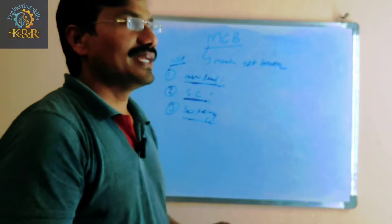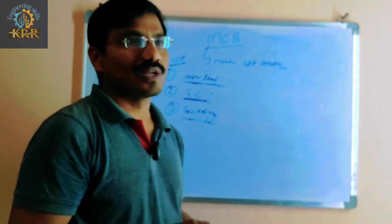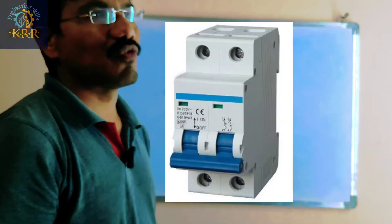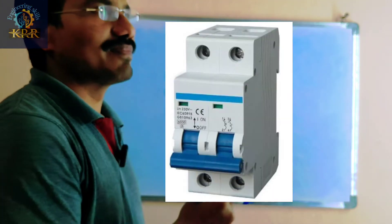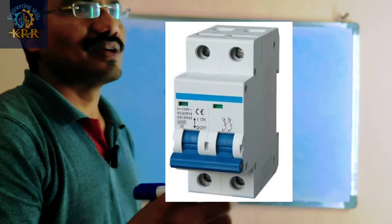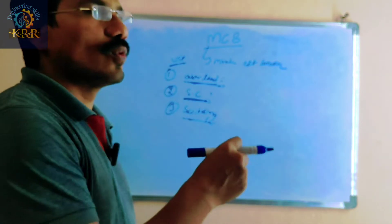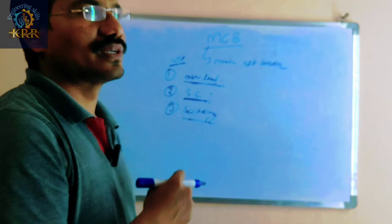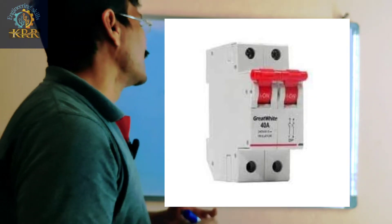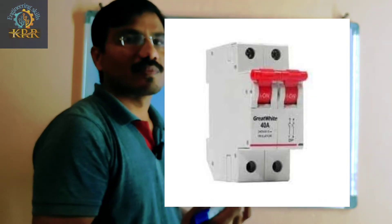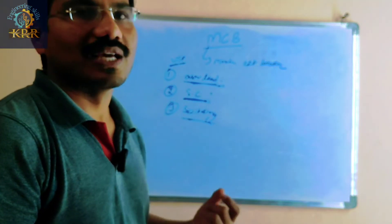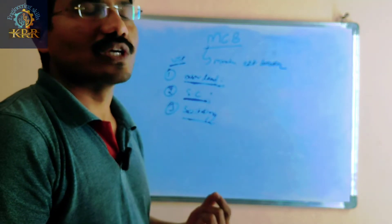For switching operations, when any maintenance work is going on, the MCB is switched off to isolate the load. After completion of maintenance work, the MCB is switched on again. This is the switching purpose for which MCBs are also used.